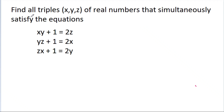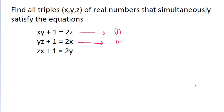In this video, we have to find all triples of real numbers that simultaneously satisfy the equations: xy plus 1 is equal to 2z, yz plus 1 is equal to 2x, and zx plus 1 is equal to 2y. Suppose this is equation 1, this is equation 2, and this is equation 3. If we subtract equation 2 from equation 1,